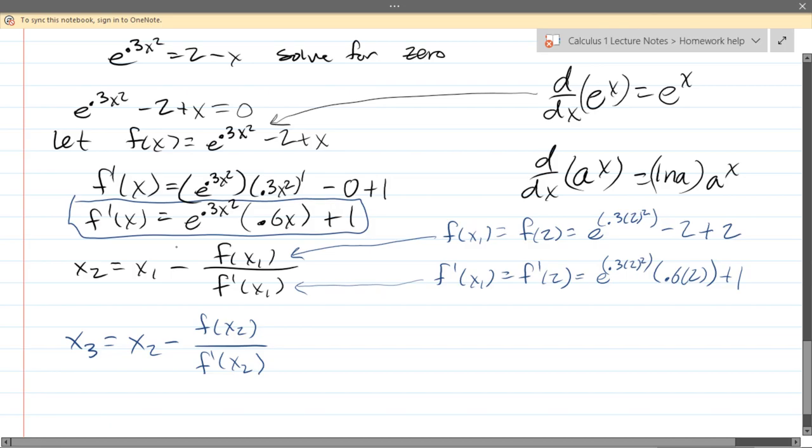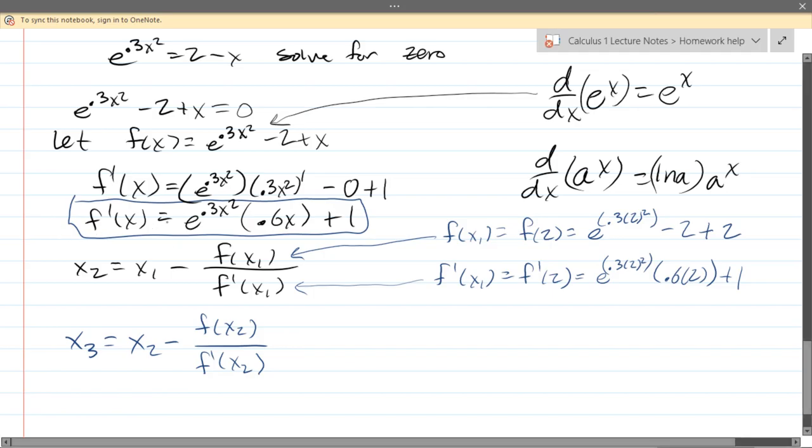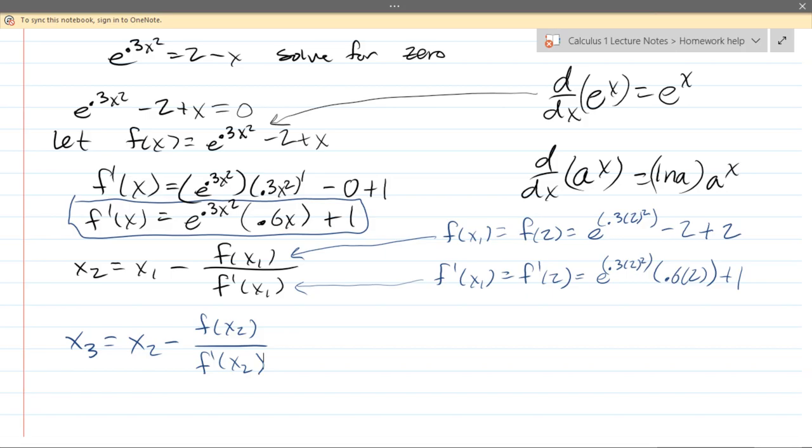And again, if I needed the next one after this, which I think all these homework questions only ask for 2 at the most. But if you need the next approximation, you just increase all the subscripts by 1 again. And you can keep going until you're accurate enough to do whatever task you're trying to accomplish.